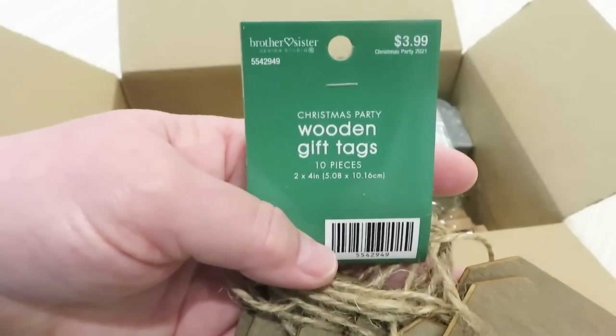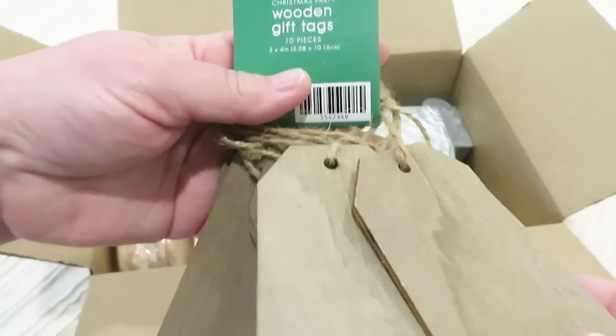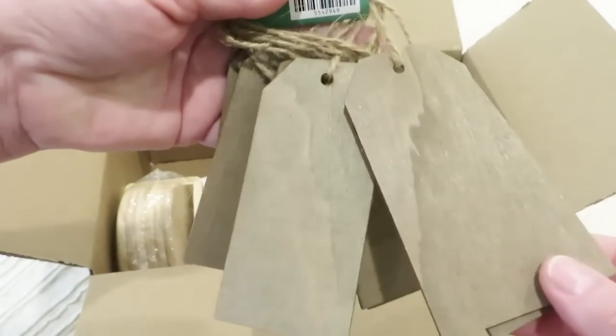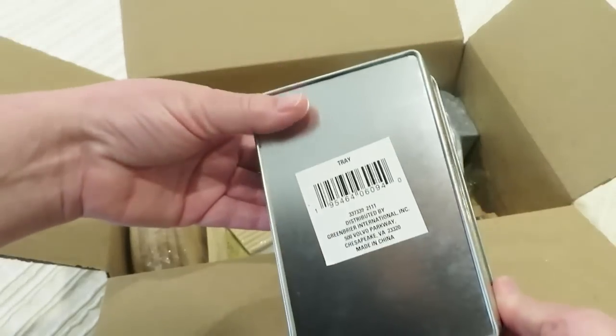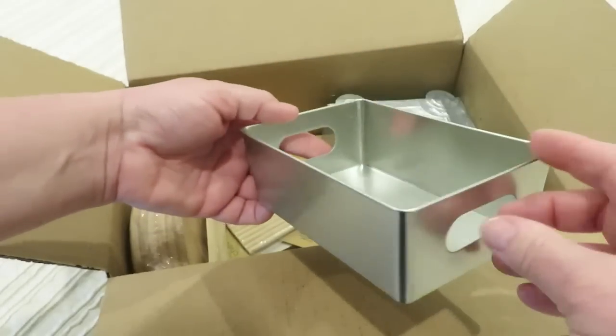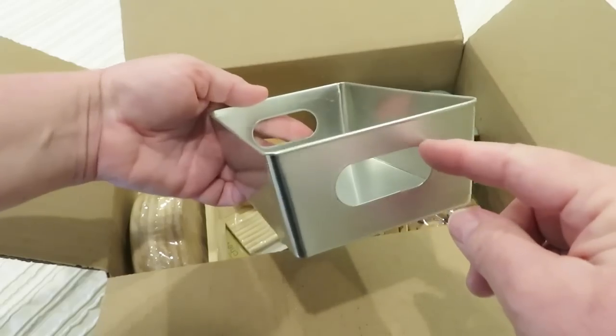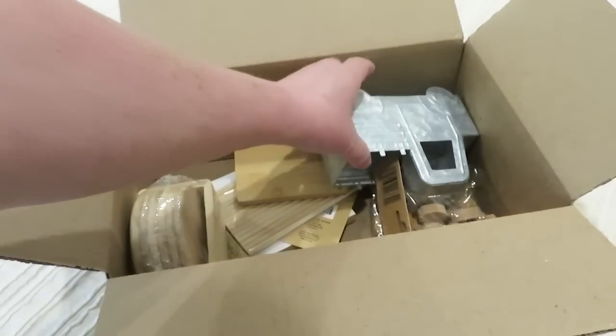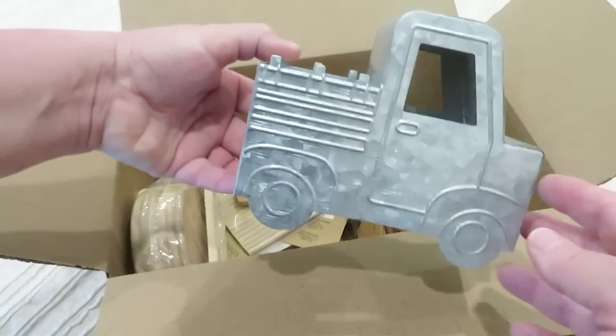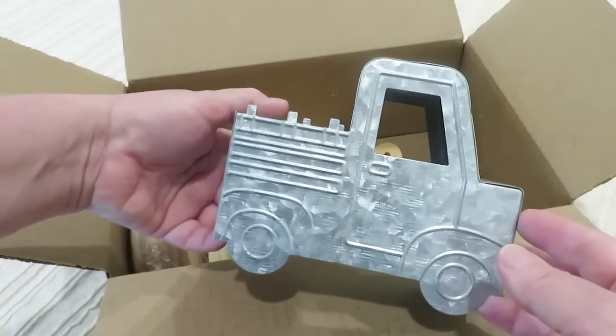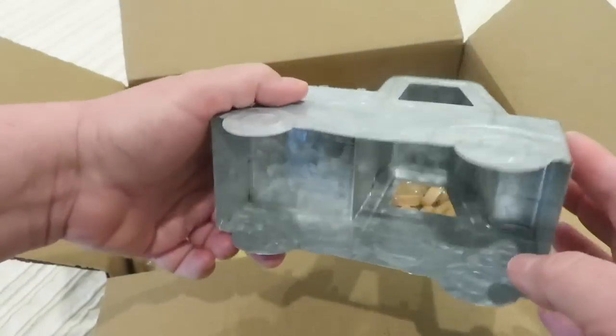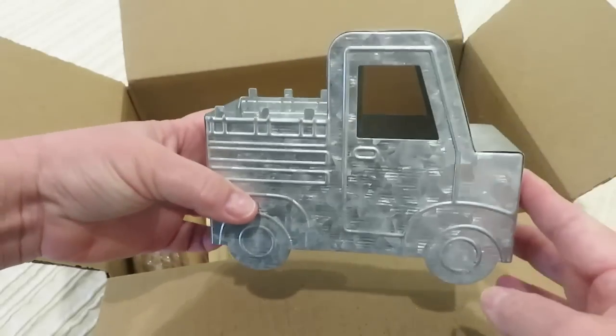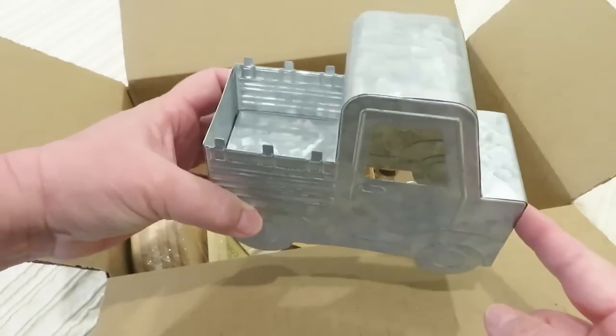Next I've got some wooden gift tags. So it looks like there are 10 of them. It looks like I've also got a metal tray to work with. This looks like it is from the Dollar Tree. Has the little handles on the side. Love these. And speaking of metal, I have got a truck. You guys know my love for the truck. So we've got a galvanized truck. I think this one is also a Dollar Tree item.